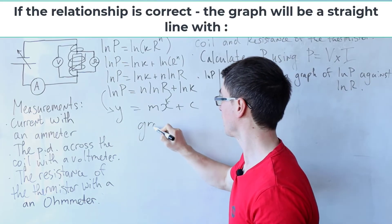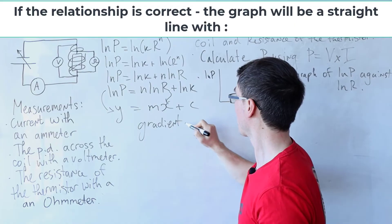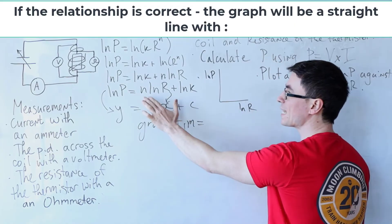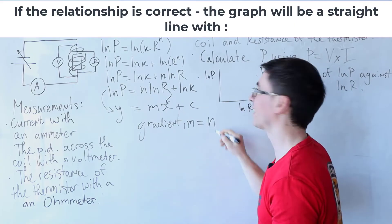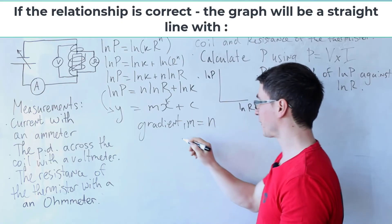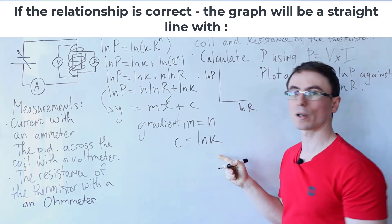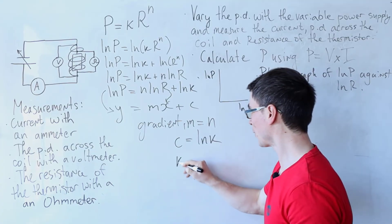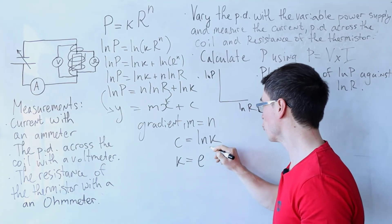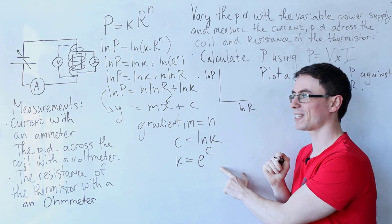Our gradient m will be equal to the constant n. Our intercept c will be equal to the natural log of k. In other words, our constant k will be equal to e raised to the power of c.